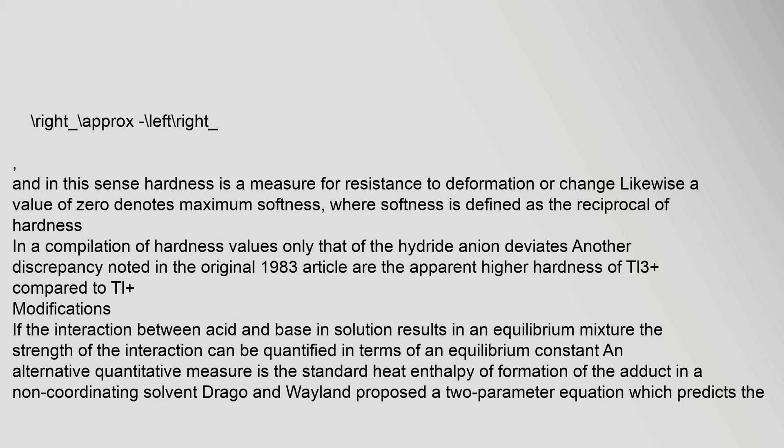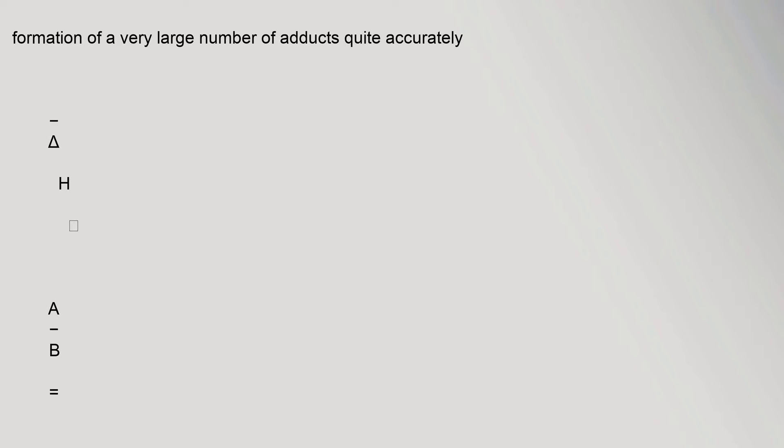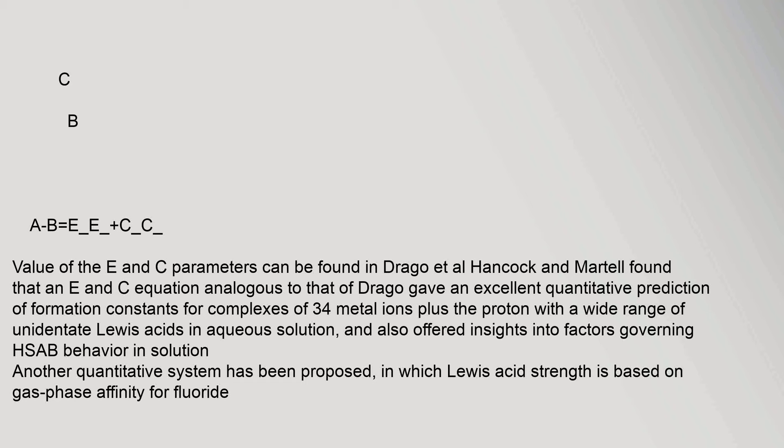Modifications: if the interaction between acid and base in solution results in an equilibrium mixture, the strength of the interaction can be quantified in terms of an equilibrium constant. An alternative quantitative measure is the standard heat (enthalpy) of formation of the adduct in a non-coordinating solvent. Drago and Wayland proposed a two-parameter equation — E_A·E_B + C_A·C_B — which predicts the formation of a very large number of adducts quite accurately. Hancock and Martel found that an analogous equation gave excellent quantitative prediction of formation constants for complexes of 34 metal ions plus the proton with a wide range of unidentate Lewis bases in aqueous solution, and offered insights into factors governing HSAB behavior. Another quantitative system has been proposed in which Lewis acid strength is based on gas-phase affinity for fluoride.